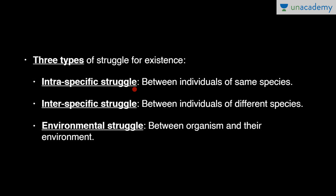The first type is intraspecific struggle — competition between individuals of the same species for the same needs like food, shelter, and breeding. This is the most acute type of struggle because it includes competition for breeding. The second type is interspecific struggle — between individuals of different species, competing for food and shelter. Since individuals belong to different species, there is no competition for breeding.